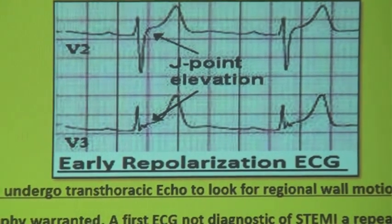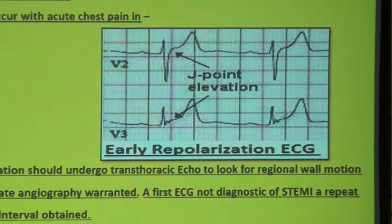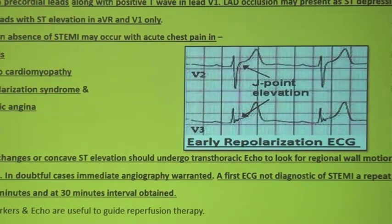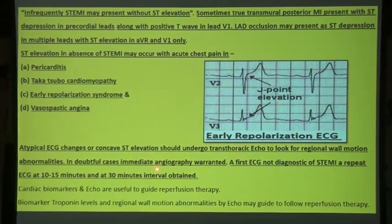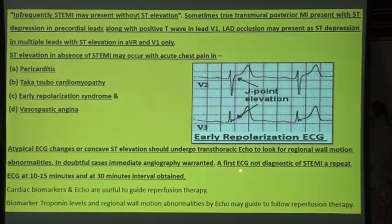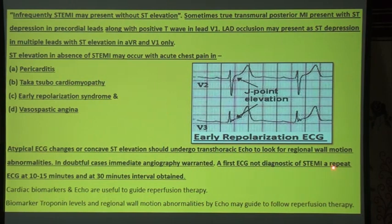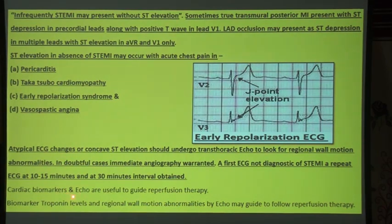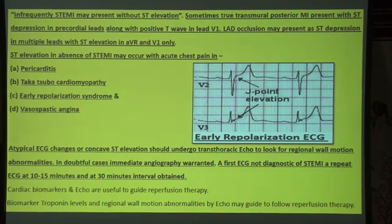Atypical ECG changes or concave ST elevation should prompt a bedside echocardiogram to look for regional wall motion abnormalities. In doubtful cases, immediate angiography is warranted. If the first ECG is not diagnostic of STEMI, a repeat ECG at 10 to 15 minutes and at 30 minutes intervals should be obtained. Cardiac biomarkers and echo are useful to guide reperfusion therapy.